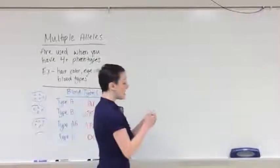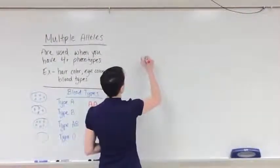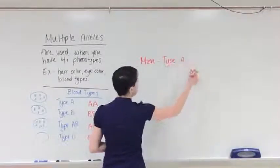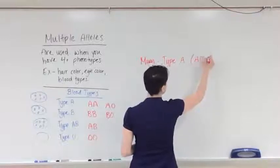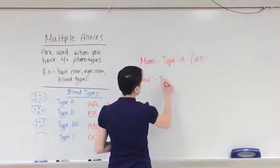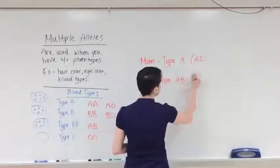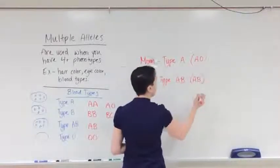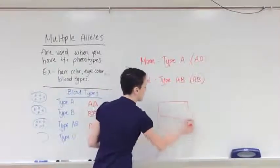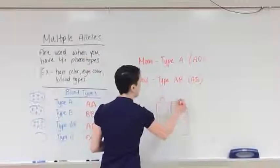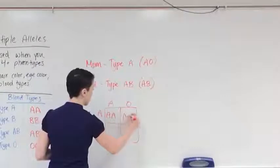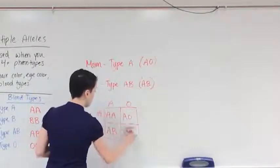Here's an example. Mom has type A blood and her genotype is AO. Dad has type AB blood, so his genotype is AB. What are their kids going to look like? It's just like any other Punnett square we do. For mom: A over one side, O over another. For dad: A next to one, B next to another. Fill in your Punnett squares.